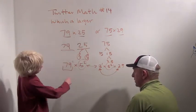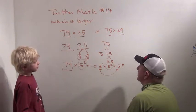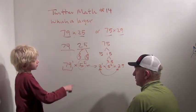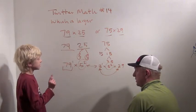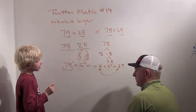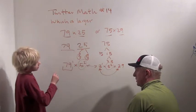Hmm, well we could try multiplying it. 3 times 29. You want to do that? Well, we could do 3 times 20 plus 3 times 9. So it's 60 plus 27. And so this is bigger. Why?